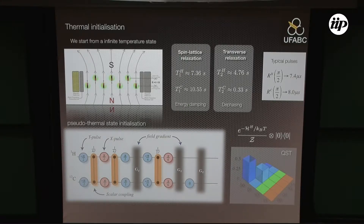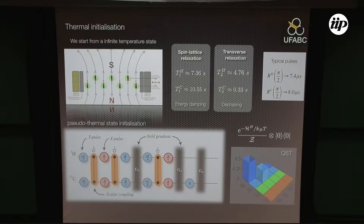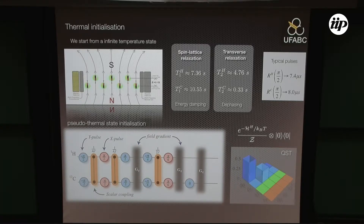We have typical decoherence times in this system of about seconds. One kind of decoherence is associated with energy damping — the amplitude damping channel — and also the dephasing channel. The time to perform a pi-over-two rotation is about microseconds, so we can perform a lot of operations within the decoherence time. This system is not good for massive quantum computation because it's not scalable, but it is quite nice for proof-of-principle experiments like quantum thermodynamics experiments, with very fine control and high-fidelity initial states.